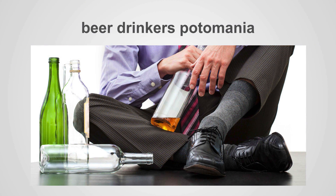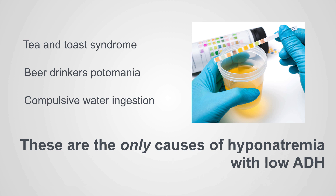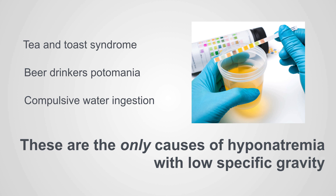The other condition where we see this is beer drinkers' potomania. The problem here is that alcohol, like bread and other carbohydrates, is metabolized to water and carbon dioxide — again, no solute for the kidney to excrete, so it limits urine output. Tea and toast syndrome, beer drinkers' potomania, and compulsive water ingestion are the only causes of hyponatremia with a low ADH, and therefore the only causes of hyponatremia with a low specific gravity.